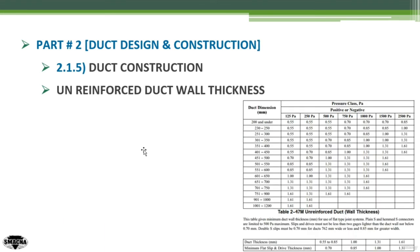Going back to the previous table, the duct sheet metal thickness of 0.7 mm in the second case lies between 0.5 and 0.85, meaning you can use a minimum flat drive slip and drive thickness of 0.7 mm. This gives you a hint that you only need to know the duct operating pressure class, and the duct sheet metal thickness will be calculated accordingly. From this, you can specify any details related to the joints, slip connections, or whether any reinforcement is required for the duct.